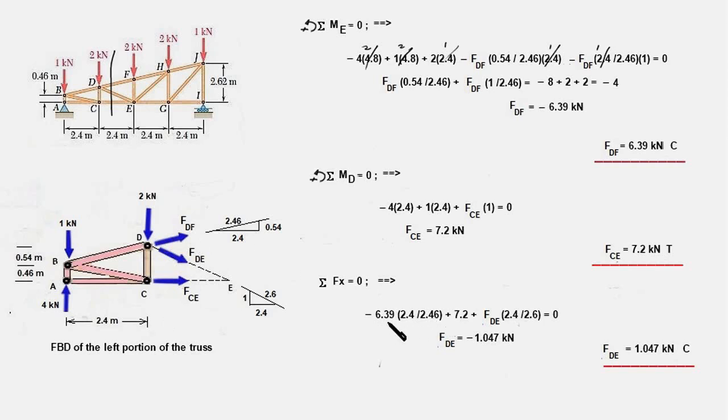We add FCE which is 7.2 kN and we add the x component of FDE which is FDE times 2.4 upon 2.6, and the sum of all these would be equal to 0, and this will work out to minus 1.047 kN. The minus sign here indicates that the force is compressive in nature, therefore FDE is 1.047 kN C to denote it's a compressive force. So these are the three internal forces that we were supposed to find out and that's our answer.